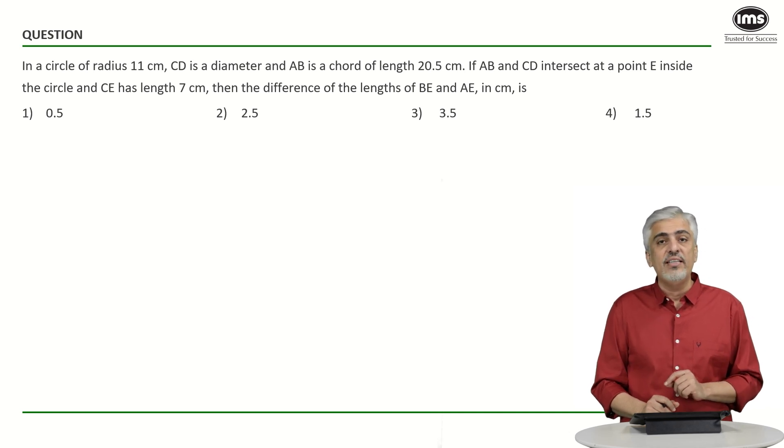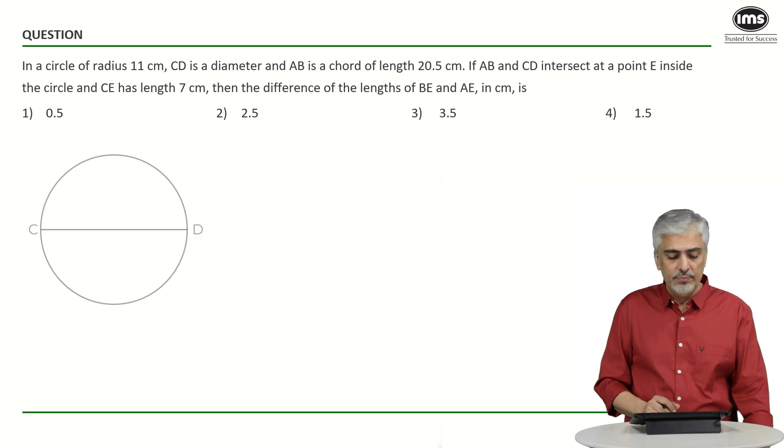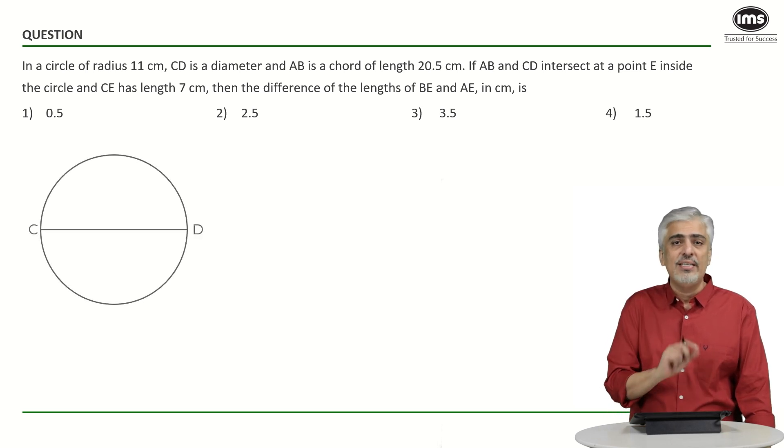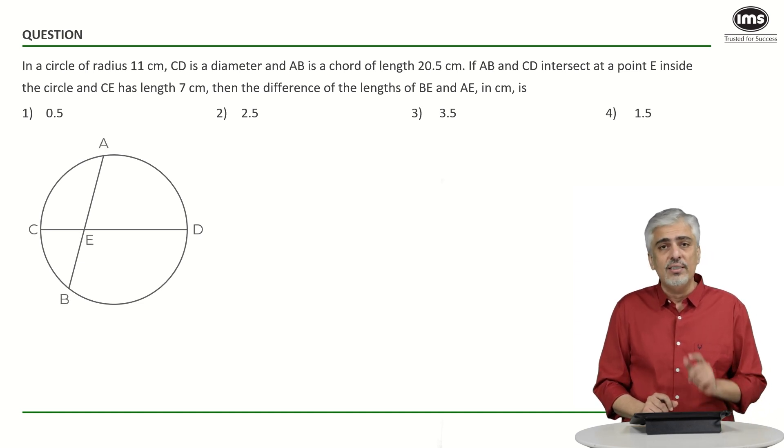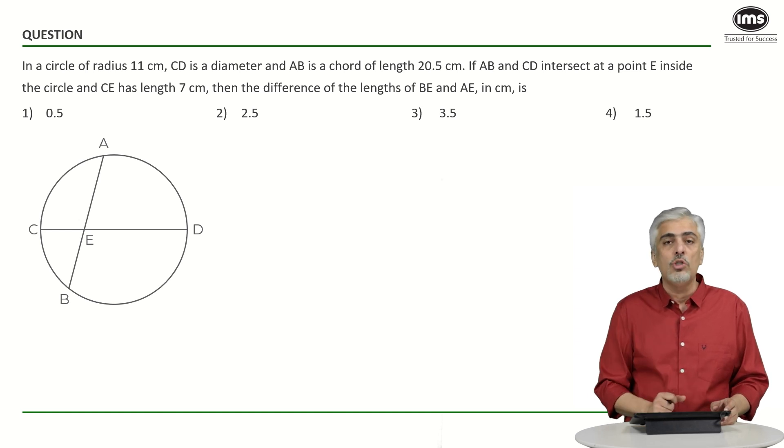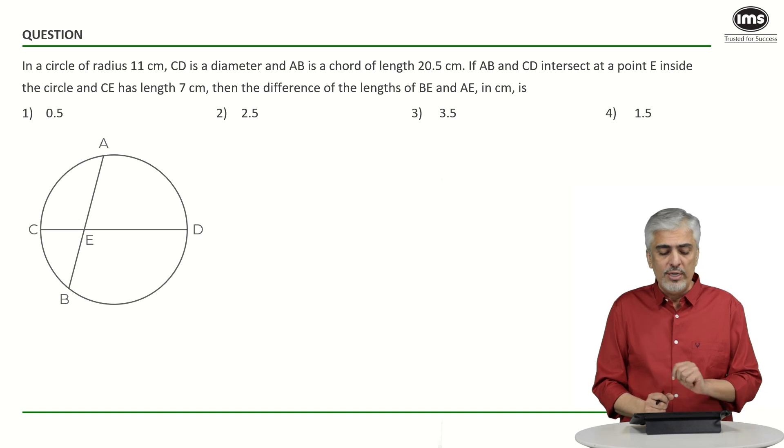Let's have a look at the diagram now. This is my diameter CD over here, and this is the chord AB. Understand that AB could not be perpendicular to CD. Why? Because if it was perpendicular, AE and EB would have been equal lengths and their difference would have been zero. The options don't state that, so this is our diagram.